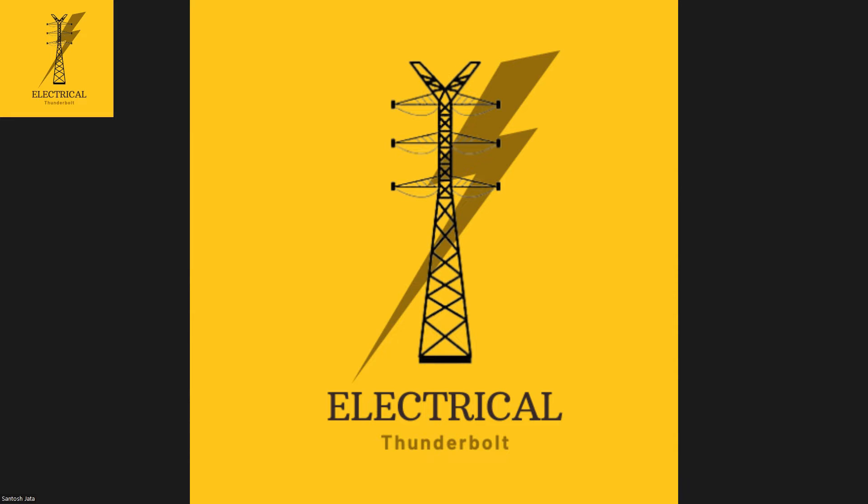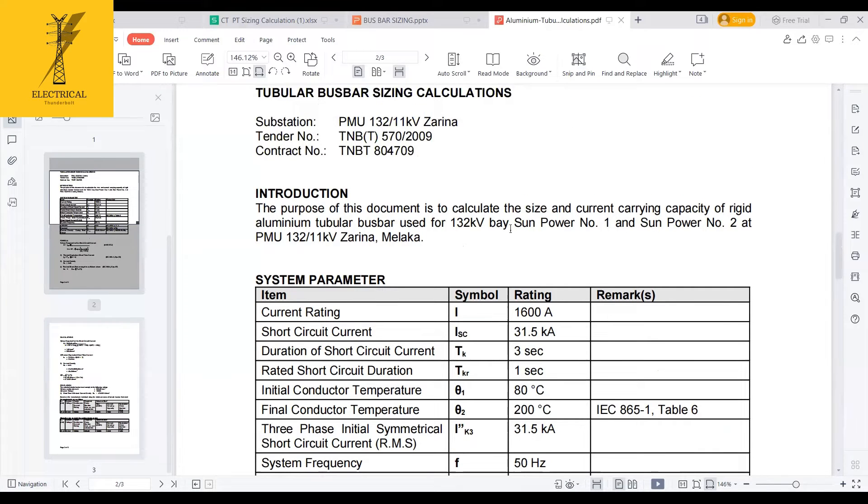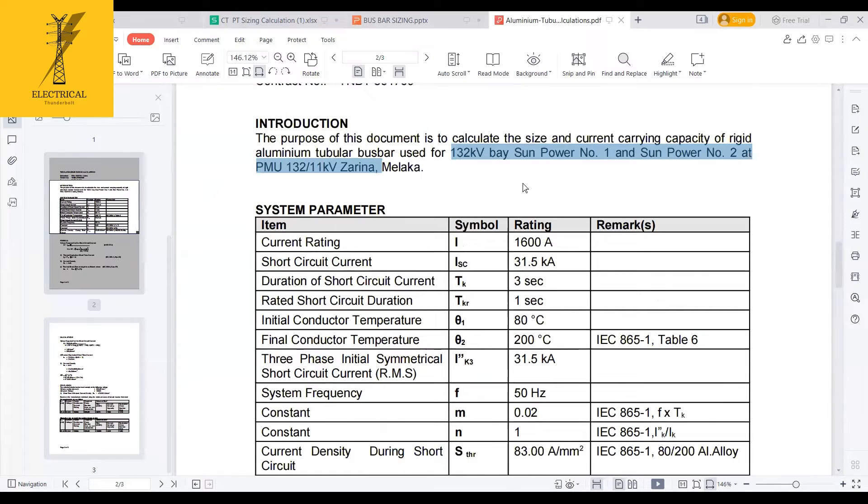Let me share you the screen. You can see this one. Here I am calculating the tubular bus for 132 kVp. Generally, this is the only sample calculation we are doing in the substation stream.